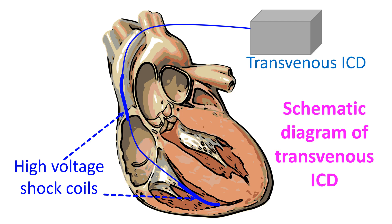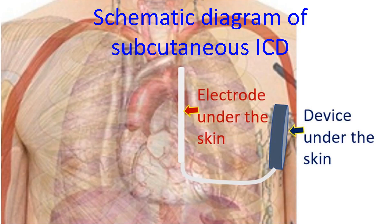To avoid these problems of leads within the heart and blood vessels, a subcutaneous ICD was designed. Subcutaneous ICD has a lead under the skin near the breast bone. But as the breast bone is between the lead and the heart, it needed much higher electrical currents to function.